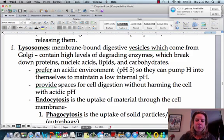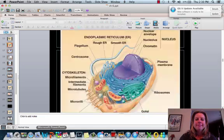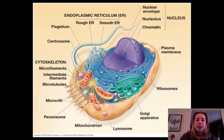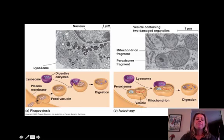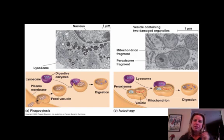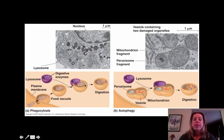Lysosomes are going to be the next ones. Your lysosomes are going to be these guys that you see here and here. The whole job of a lysosome is they have very, very low pH within them. If I say low pH, that means they're acidic — and that means they're going to be able to break stuff down. So if the cell takes in food, lysosomes can fuse with that food vacuole and digest whatever is in there.